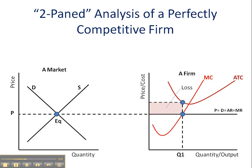In the short run, a firm can operate at a loss, but in the long run, if a firm is facing consecutive quarters of a loss, it will either remedy that situation or it will go out of business. The only two long-run possibilities for a perfectly competitive firm are the firm goes out of business or the firm operates at their normal profit level.